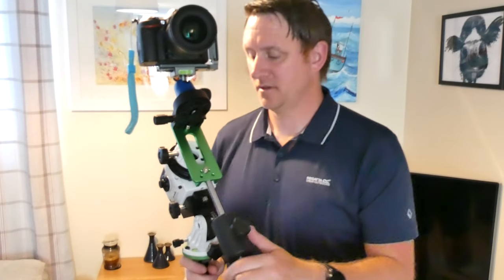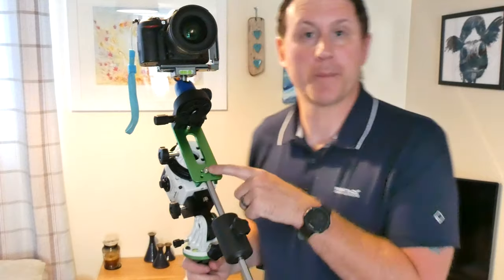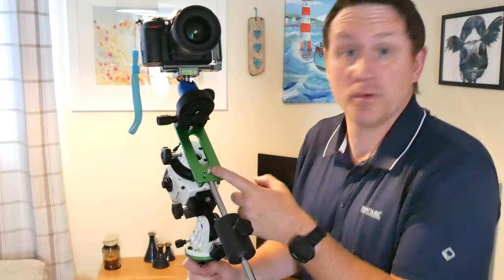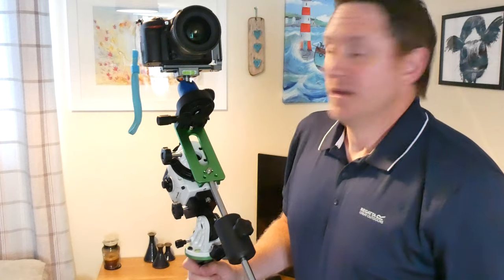And that's with the fine adjustment L bracket on. And again, you can attach the second piece of equipment on there. Two cameras, two telescopes, one camera, one telescope. That is that, in essence, Star Tracker, all fitted, ready to go.